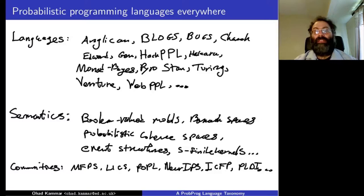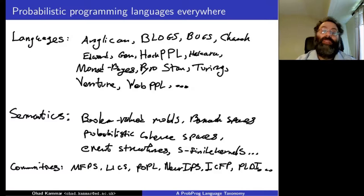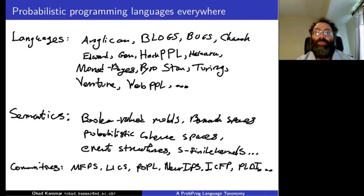Matching this proliferation of languages, we're seeing a proliferation in semantics across major community sub-communities — MFPS especially, who've been doing it for many years, but also LICS and POPL, and the more applied conferences like NeurIPS and PLDI. Several years ago, Prakash asked me to try and build bridges between very different semantics for probabilistic programming languages.